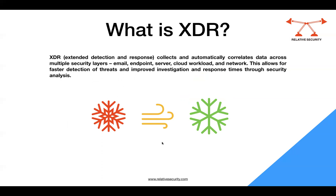XDR also performs correlation using advanced machine learning and algorithms to create alerts. And not only does it create alerts — it also responds to those alerts. In the case of IDS it is only detecting the intrusion, whereas in XDR it is detecting using advanced algorithms and also responding to those intrusions.